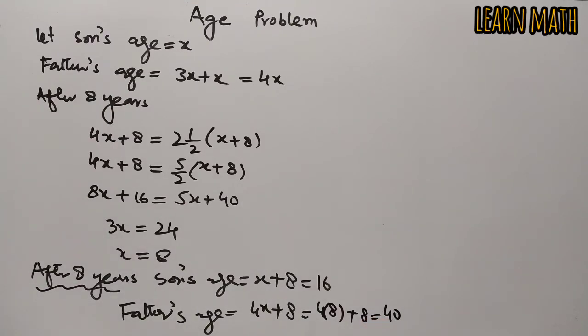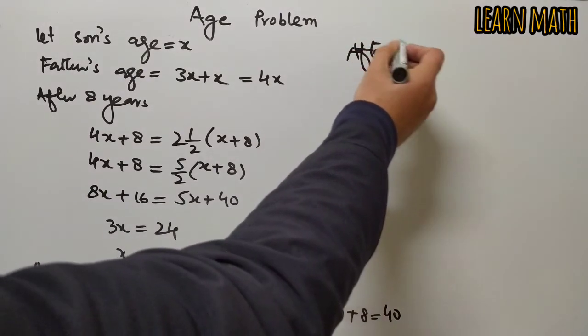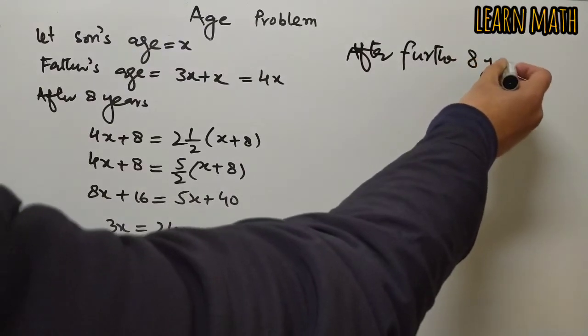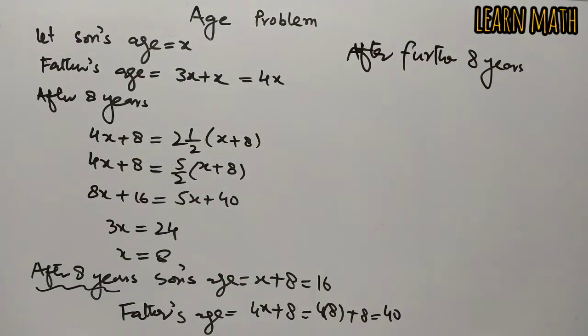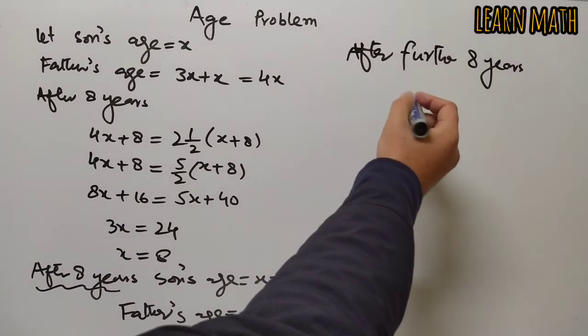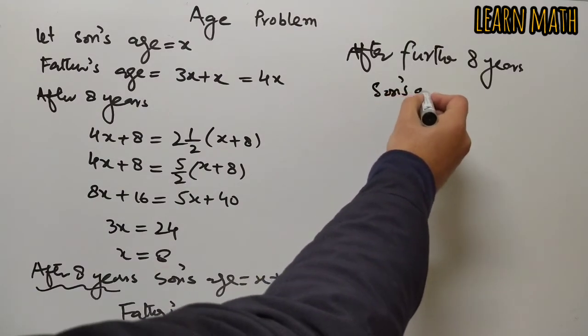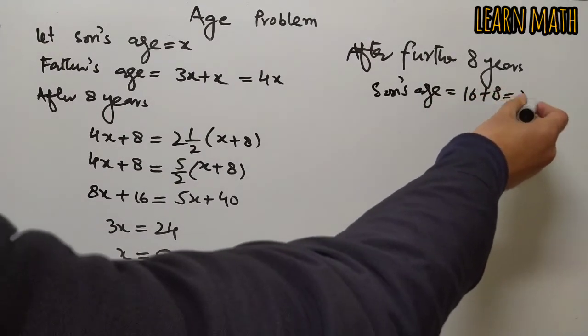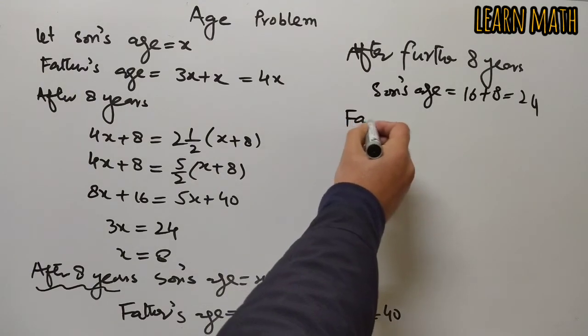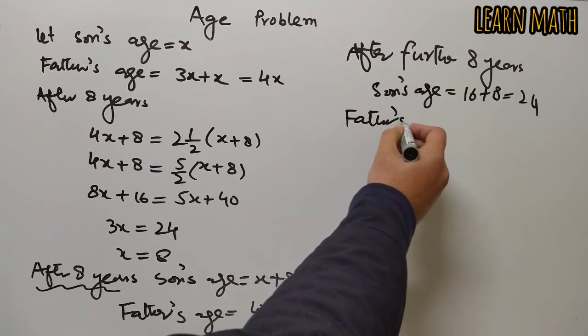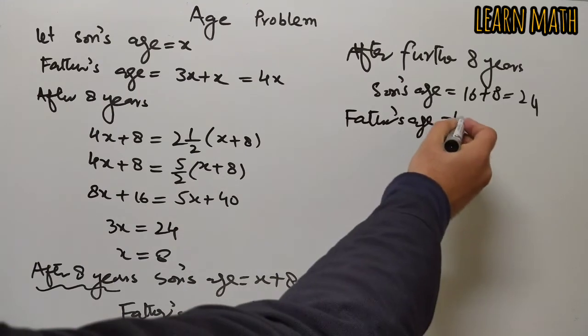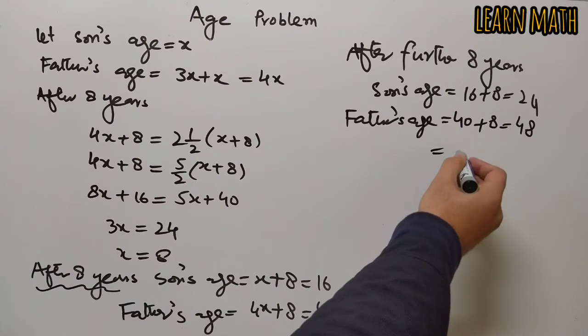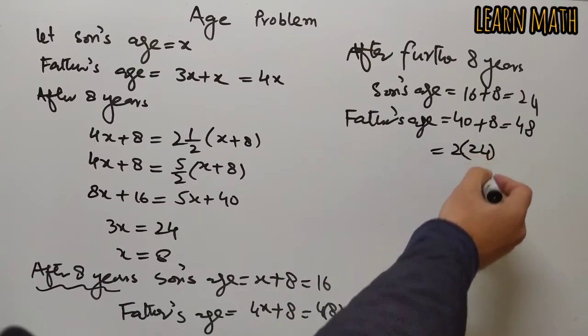In the question, we have to find after further eight years, father's age is how much times his son's age. So after eight years, son's age will be 16 plus 8, which is 24. And father's age will be 40 plus 8 and that is 48, which can be written as 2 into 24.